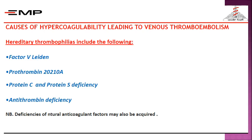What are the causes that lead to venous thromboembolism, specifically hereditary thrombophilia? The most important causes are factor V Leiden, prothrombin G20210A, protein C and protein S deficiency, and antithrombin deficiency.